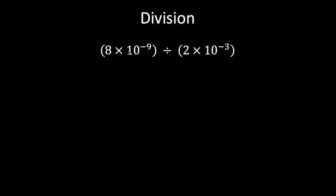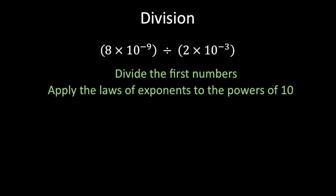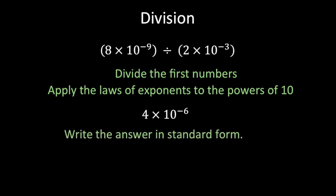Now let's move to division. Again we have two numbers in standard form. Divide the decimal parts, then apply the quotient rule to the powers of 10. For example: 8 divided by 2 is 4, and 10 to the negative 9 divided by 10 to the negative 3 equals 10 to the power of negative 9 minus negative 3, which is 10 to the power of negative 6. Check that the answer is in standard form — 4 is between 1 and 10, so the answer is 4 times 10 to the power of negative 6.